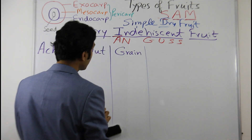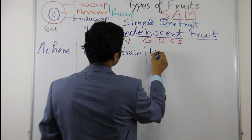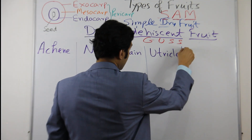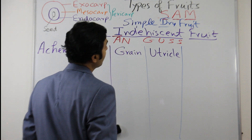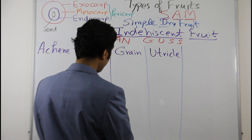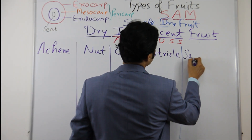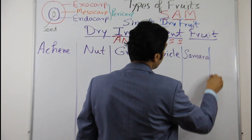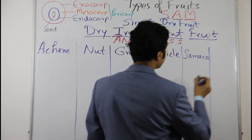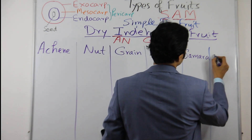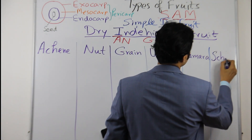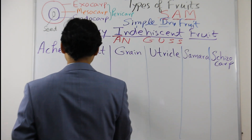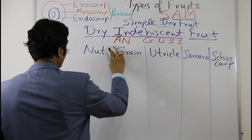Then we have utricle, then we have samara, and then we have schizocarp. I will discuss schizocarp as well.